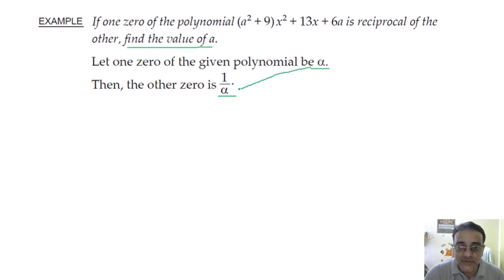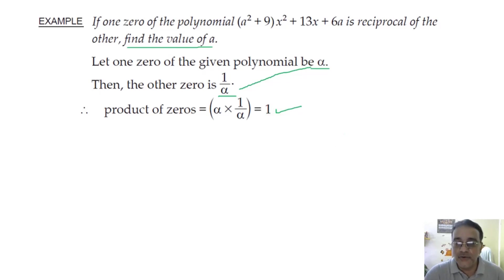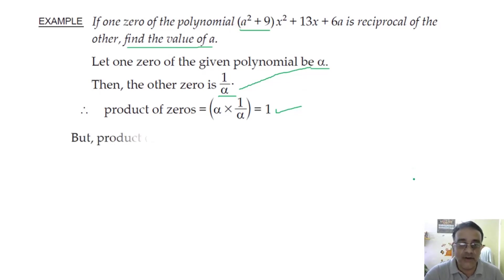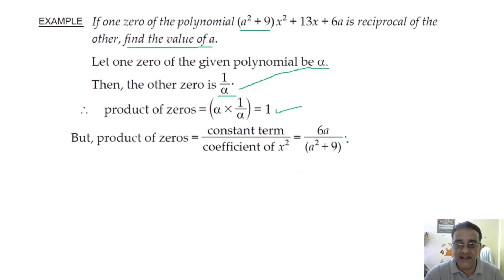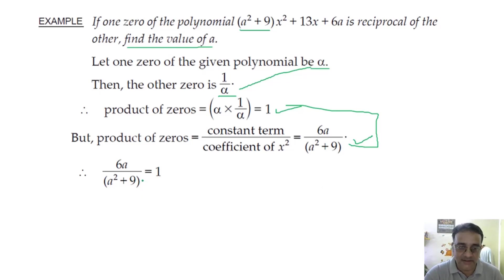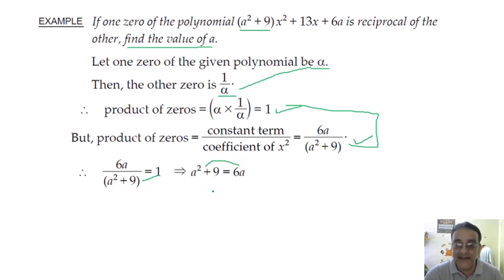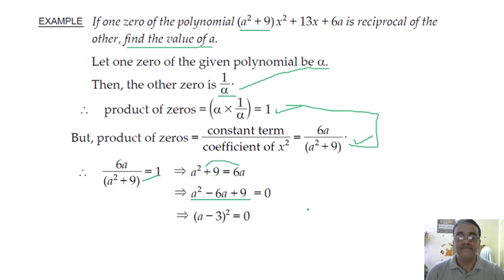The product of these two zeros α × (1/α) = 1. Using the product formula — constant term upon coefficient of x² — we get 6a/(a² + 9). Equating these two: cross multiply to get a² + 9 = 6a, which gives a² − 6a + 9 = 0. This is a perfect square: (a − 3)² = 0, so a = 3.